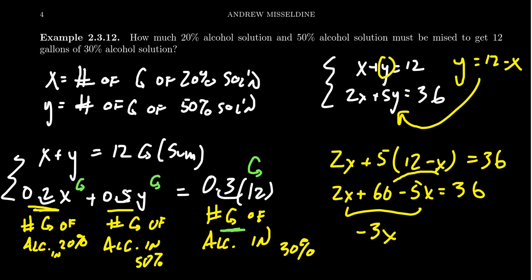We're going to move the 60 to the other side, so we get 36 minus 60 which is negative 24. Then dividing both sides by negative 3, we get x equals negative 24 over negative 3, which gives us 8 gallons of the 20% solution.